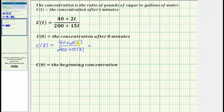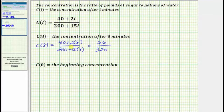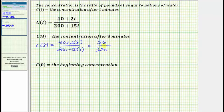Two times eight equals 16. 40 plus 16 equals 56. 15 times eight equals 120. 200 plus 120 equals 320. Remember, this is the ratio of pounds of sugar per gallons of water. So after eight minutes, there are 56 pounds of sugar in a total of 320 gallons. Let's go ahead and simplify this fraction.